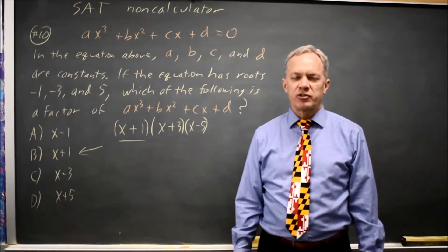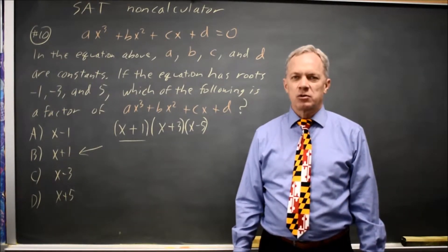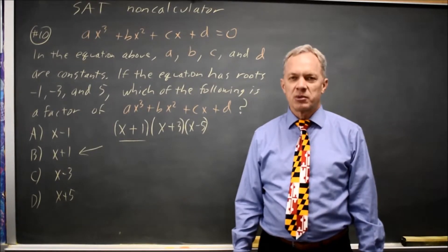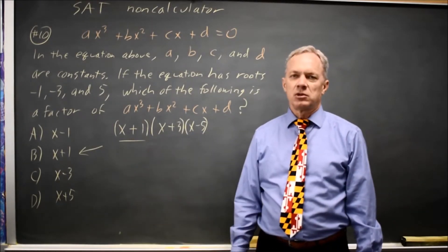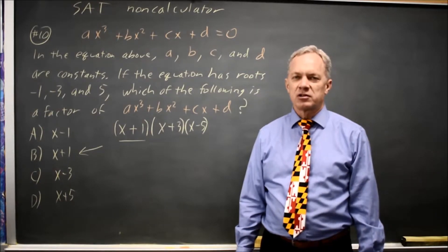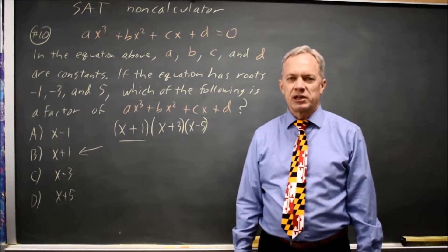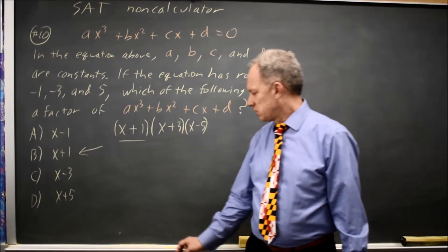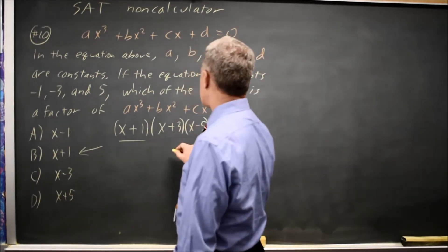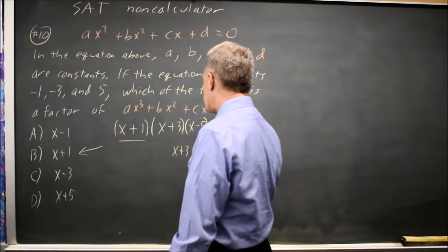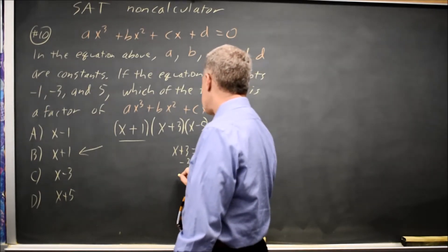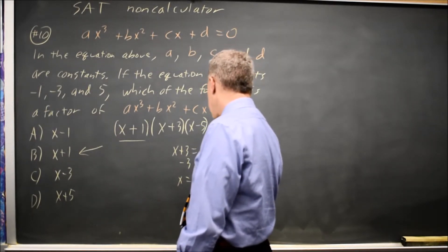College Board often asks you about the factors or zeros of a polynomial, and it's worth reviewing these and making sure you remember to use x minus the zero. Or if you're given the factors, set the factor equal to 0 and then solve. So if I were given x plus 3, I would say x plus 3 equals 0, subtract 3 from both sides, so x equals negative 3.